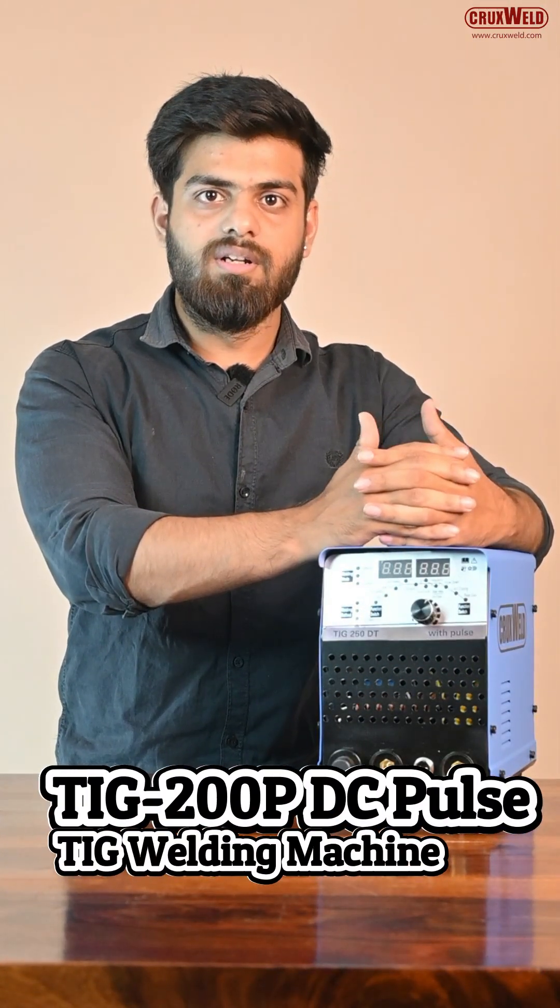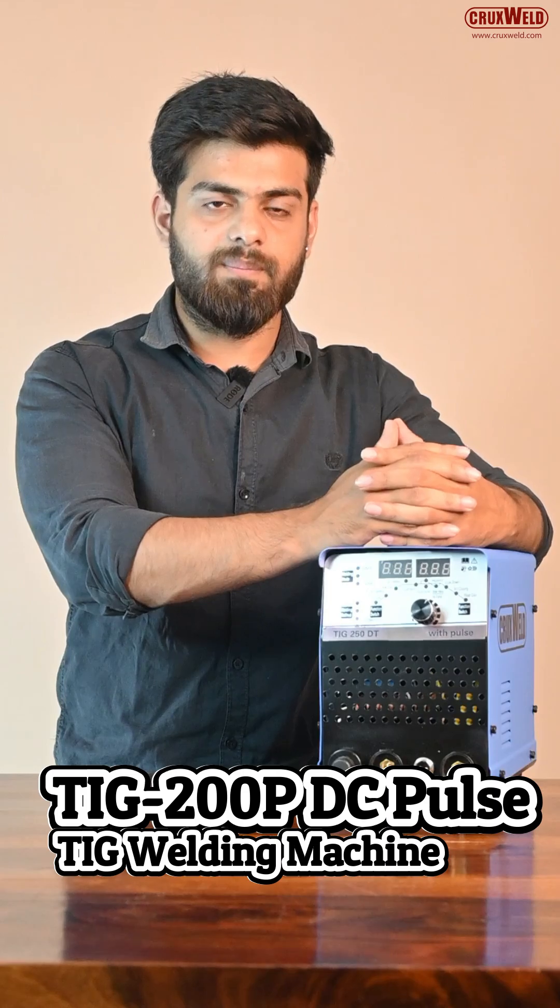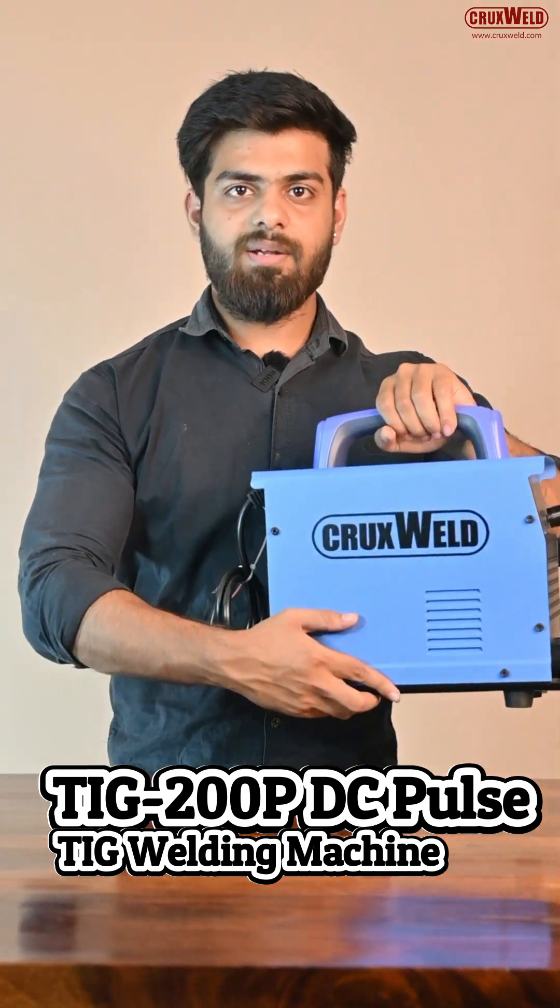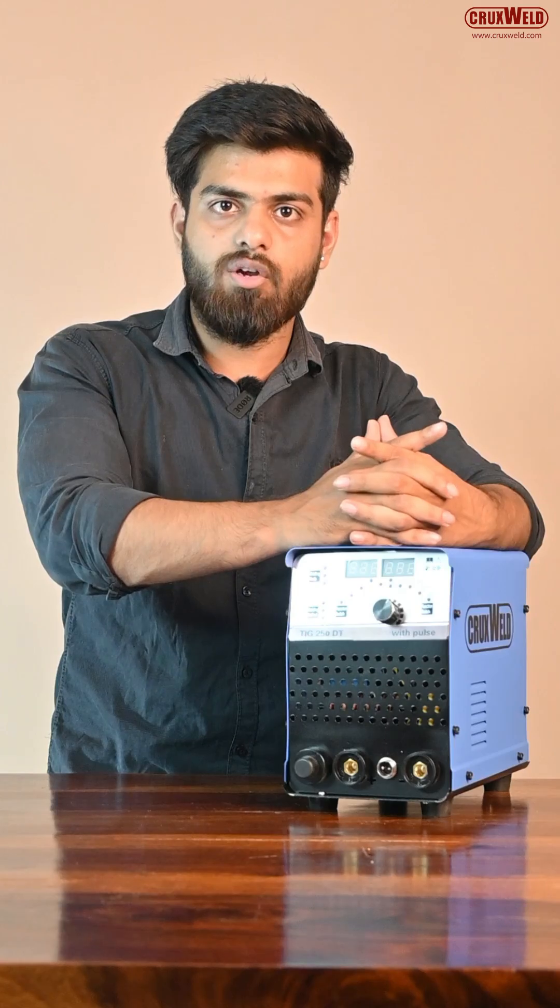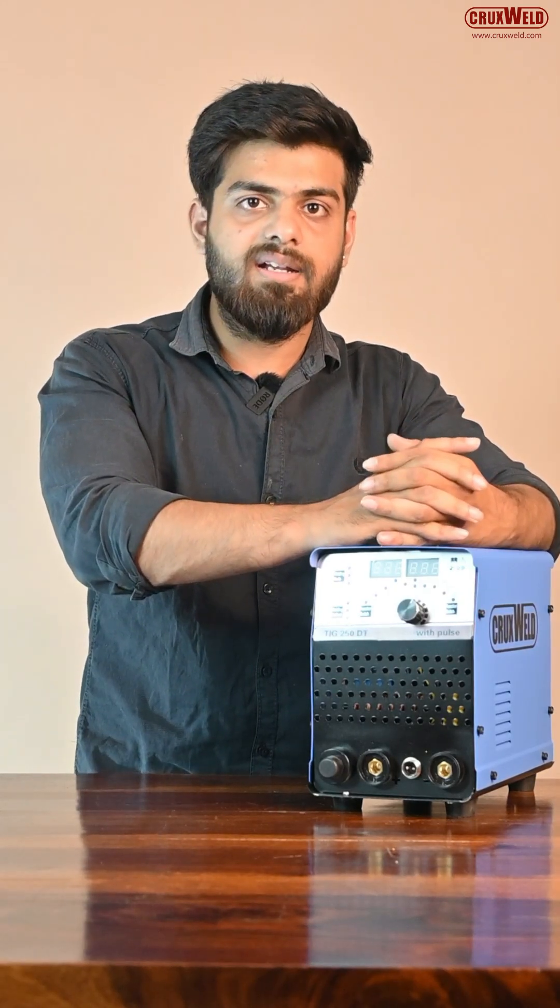Hello guys, welcome to Crux Weld. In this video I am going to tell you about TIG200P DC welding machine. This Crux Weld TIG200P DC welding machine comes with pulse welding option. Crux Weld TIG200P works perfectly on thin metals like mild steel and stainless steel.